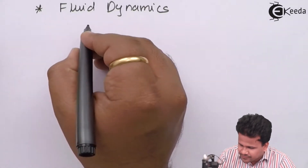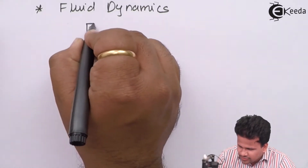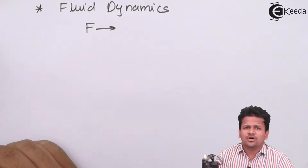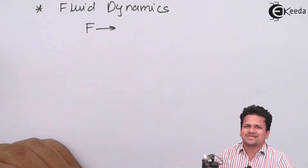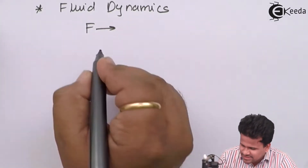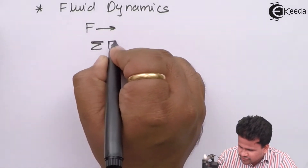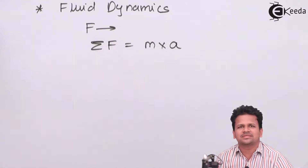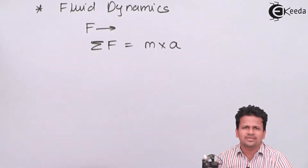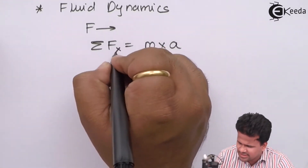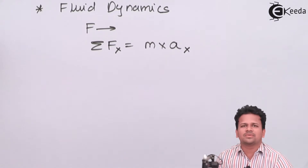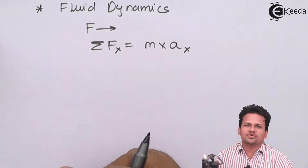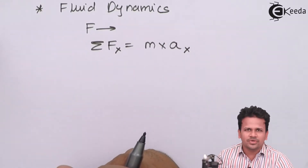We are going to apply force which is acting on the fluid. We already know what is Newton's second law of motion: the summation of all the forces in a particular direction is equal to mass into acceleration in that direction. Let us consider this as the x direction, so the acceleration will be in the x direction. There are different types of forces which are acting on the fluid.